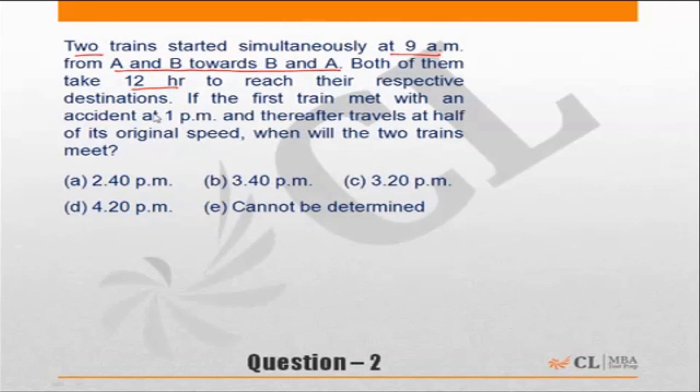If the first train met with an accident at 1 p.m. and thereafter travels at half the original speed, when will the two trains meet?